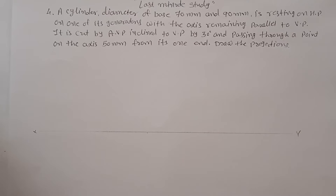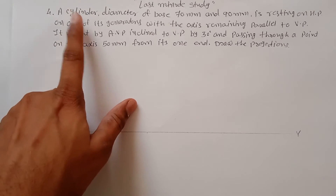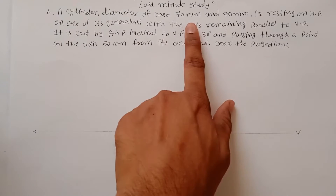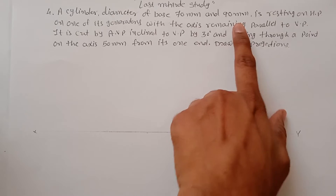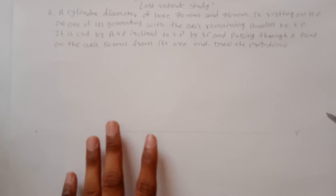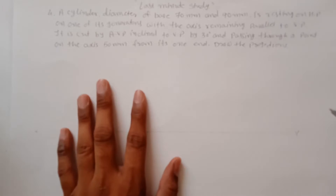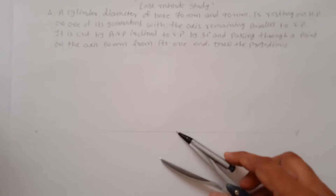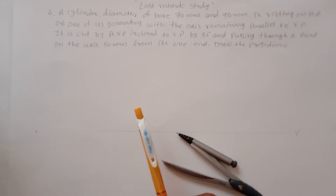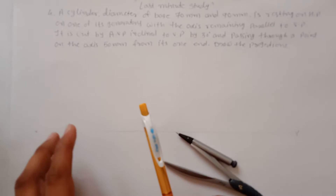Problem number four from the section of solids. The solid is a cylinder with a diameter of 70mm and height of 90mm, resting on the HP with one of its generators. We need to draw the top view as a circle and the front view as a rectangle. Since the solid is resting with its generator, we have to orient it horizontally.